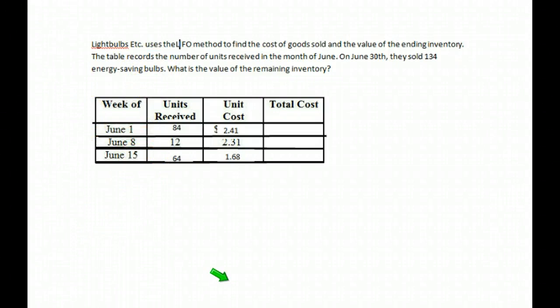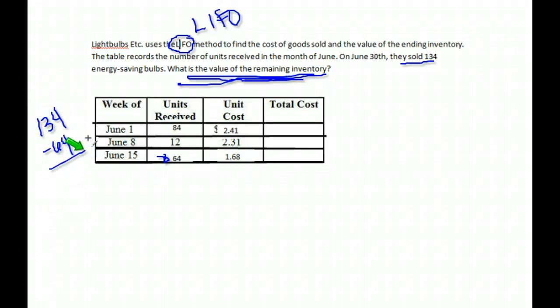This is the same question, very similar. Here's our light bulbs. We're still going to use the LIFO method. So last in, first out, where you sell from the bottom and go up. Same situation. They sold 134. What is the value of the remaining inventory? So this time we're not finding the cost of goods sold. This time we're finding what's the value of the stuff that's left over that did not get sold. In Last In, First Out method, remember we start from the bottom and go up. So if we had 134, we sold the 64 first from the bottom up. That leaves us with 70. Then we go up from there. So then we sell the 12. Then we have 58 left over to sell out of these final amounts.